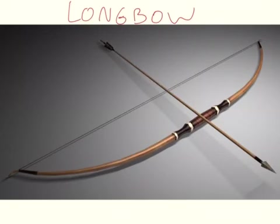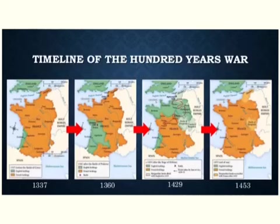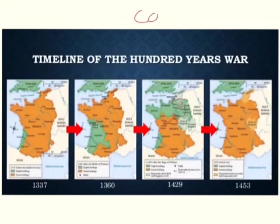Here you can see an image of the longbow. It was a weapon that was very cheap to make, very fast to use, and deadly — it would also pierce through armour. Here is a map showing the different stages of the 100 Years' War. As the legend is hard to see, the orange shows what France controls and the green shows what England controls. You can see how things change over time, and ultimately France wins the war, except for a small place called Calais which the English keep, in 1453.